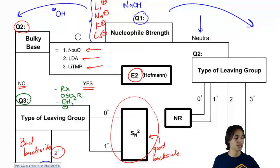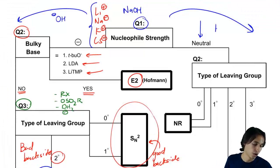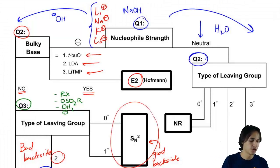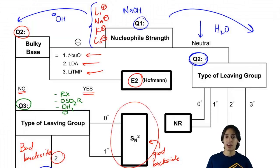What if we have something like instead of OH negative, how if we just have water? Water is neutral, right? So now my second question is actually this pathway is a lot easier. All I'm going to ask myself is, okay, what type of leaving group do I have?